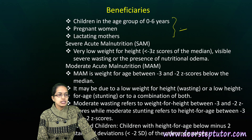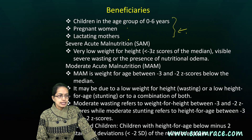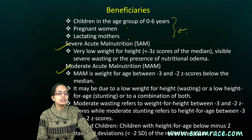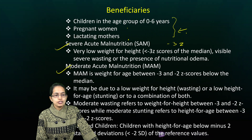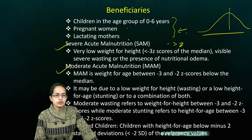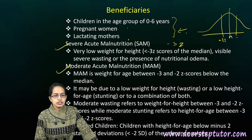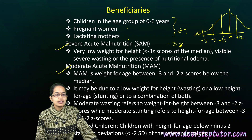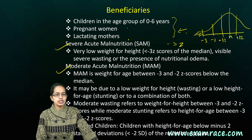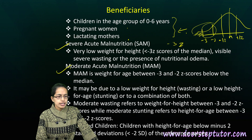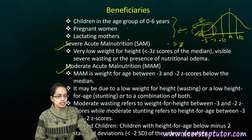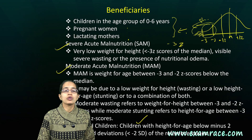Beneficiaries include children under age 6 and pregnant and lactating mothers. For classifying acute and moderate malnutrition using Z scores: beyond minus 3 standard deviations is severe acute malnutrition; between minus 2 and minus 3 is moderate acute malnutrition; less than minus 2 is where we classify stunted children.